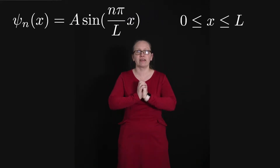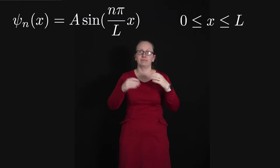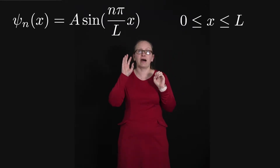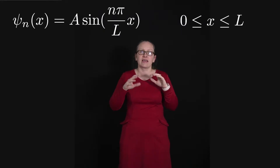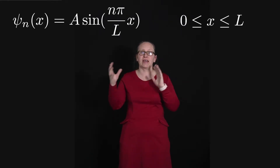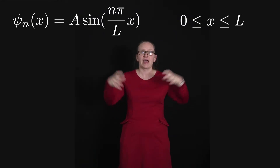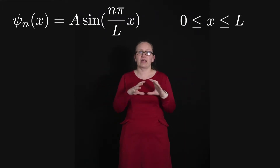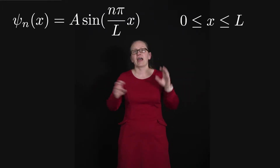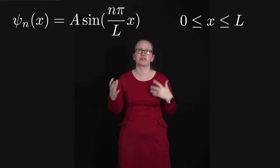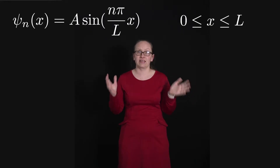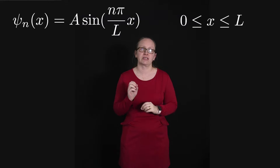The wave function of an electron trapped in an infinite potential well is given by ψ_n(x) = A sin(nπ/L · x), and this is for x between 0 and L — i.e., when the electron is inside the well. Outside the well, the wave function is just equal to 0. As we work through this, we'll also be able to be more specific about what that A is in the expression.